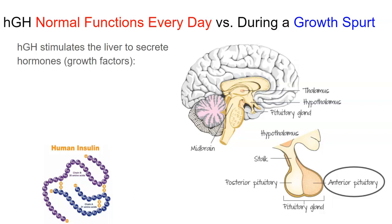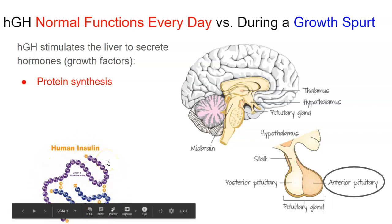After human growth hormone is released from the anterior pituitary, it's going to go into the liver and it's going to release things called growth factors. And these growth factors are going to go to other types of cells, which are going to control something called protein synthesis. Because this is in red, that means it's a normal function every day that it's happening, and then it would be ramped up potentially during a growth spurt. Protein synthesis, we're going to learn more about in chapter 18. Basically the idea behind it is it's creating certain proteins — for example, we have this protein right here, which is insulin.